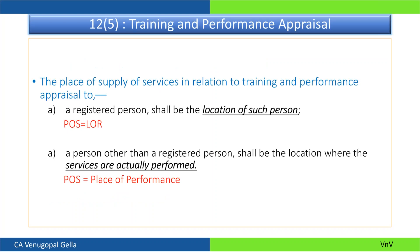Training and performance appraisal services: if I am in Karnataka conducting a training and you are a registered person who paid the fees, the place of supply is your location — the location of recipient. If you are not a registered person, the place of supply is wherever I am actually performing the service. If I travel all the way to Delhi and give a lecture, the place of supply would be Delhi — wherever the performance is happening.